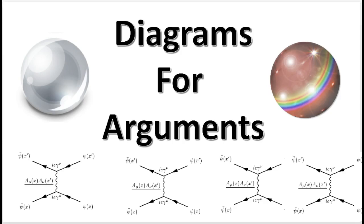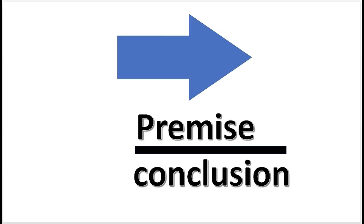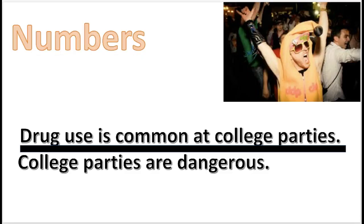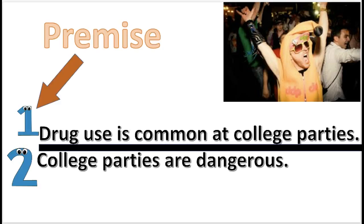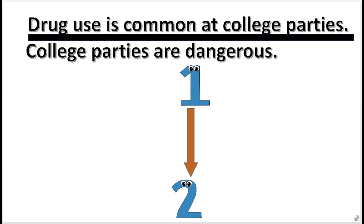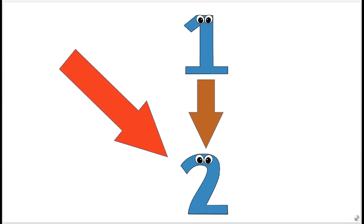We introduce the diagrams for arguments that show how the premise provides support for the conclusion. For the simplest kind of diagram, it consists of a single vertical arrow. This diagram is used in arguments where a single premise implies a conclusion. To help draw a diagram, we will insert numbers before the statement. In this argument, statement 1 is the premise and statement 2 is the conclusion. We diagram the argument like this — this diagram asserts that statement 1 implies statement 2.